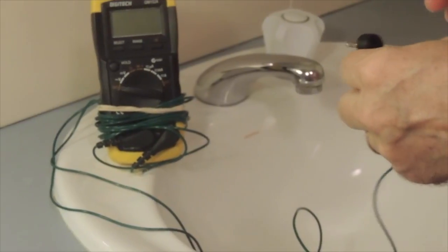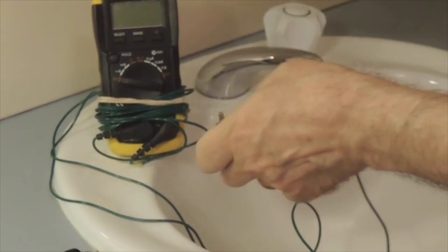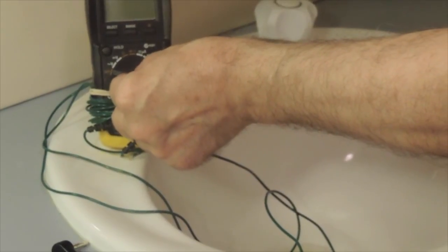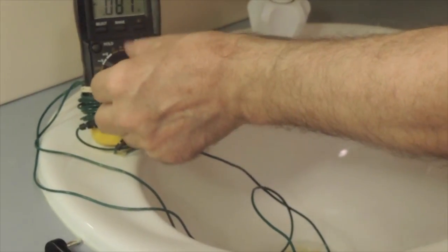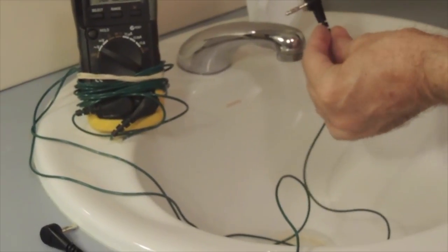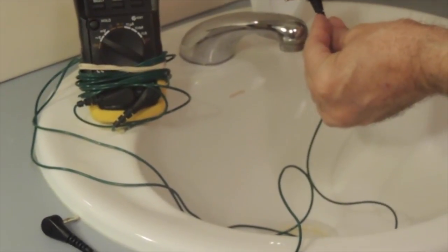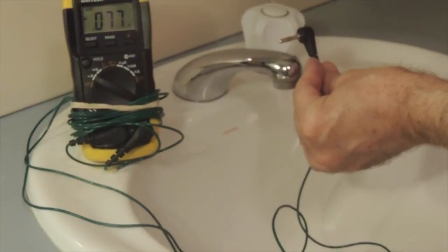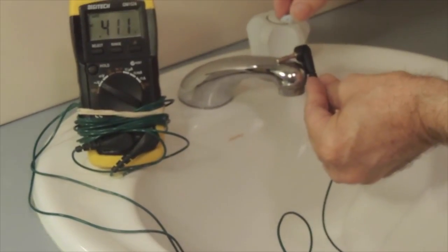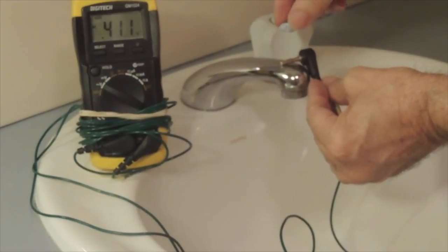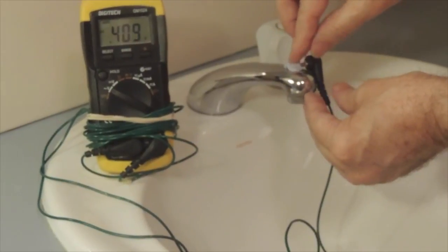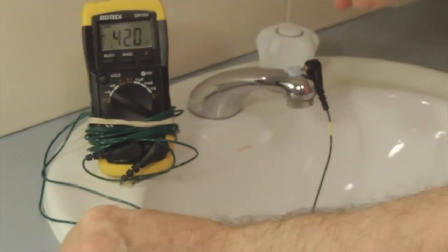We're now going to confirm that the tap is earthed, so I go to the auto range multimeter, I turn it onto the AC volt setting and ignore the reading for now. I then want to earth the multimeter. A multimeter always needs to be earthed or grounded to measure accurately, so I attach the end of one lead, metal lead to the metal tap. I'm holding it down with some blue tape, or you can use sticky tape, anything, just to ensure metal-to-metal contact.